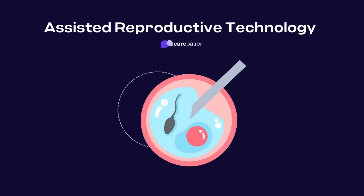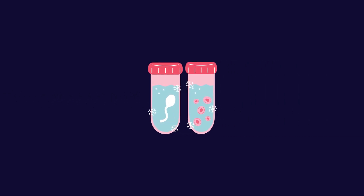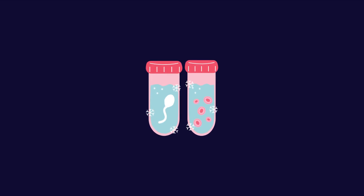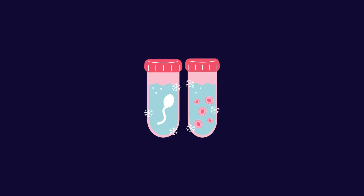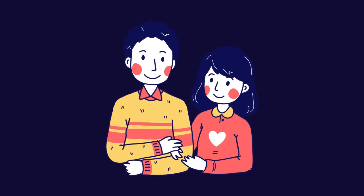Assisted reproductive technology refers to advanced medical procedures used primarily for addressing infertility issues. These technologies involve manipulating sperm and eggs or embryos outside the body to enhance the chances of conception. This field has provided groundbreaking solutions for countless individuals and couples struggling with fertility issues, offering them a path to parenthood that was not possible in past generations.